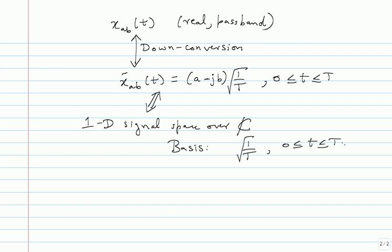The subtle switch that has happened: dealing with the real passband signal gives a two-dimensional signal space over ℝ. After down conversion, viewed as a complex signal and doing Gram-Schmidt, you get only one basis. That is why, in the picture I drew, once you down convert your correlator is nothing but integrate-and-dump. But you have to do two integrates-and-dumps: one for the I channel, one for the Q channel. It is the same thing viewed differently — the basis changes but you need one complex basis vector, with every complex number multiplying it.